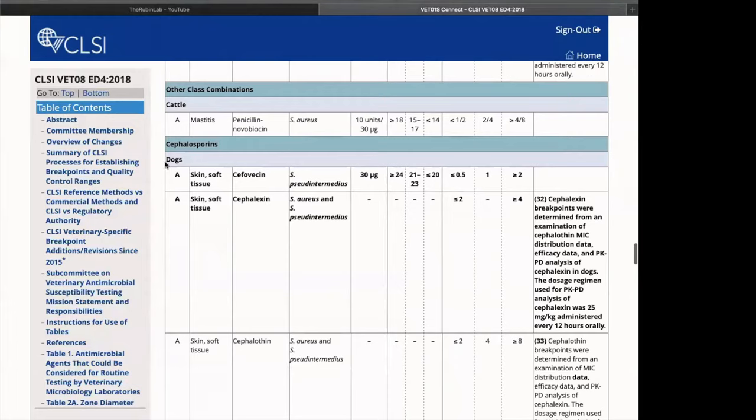So here you can see our interpretive criteria for cefovecin for dogs for skin and soft tissue infections for the organism Staphylococcus pseudintermedius. With a 30 microgram disc, a zone diameter of greater than or equal to 24 millimeters would be considered susceptible. 21 to 23 millimeters would be considered intermediate, and less than or equal to 20 millimeters would be considered resistant.